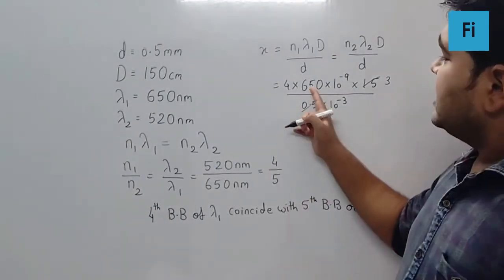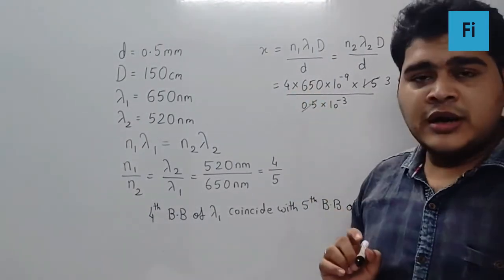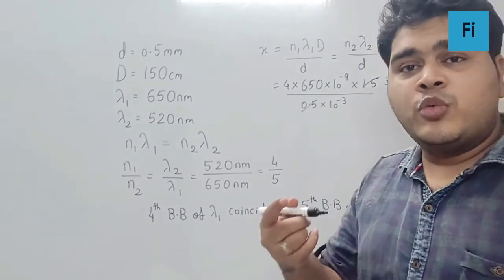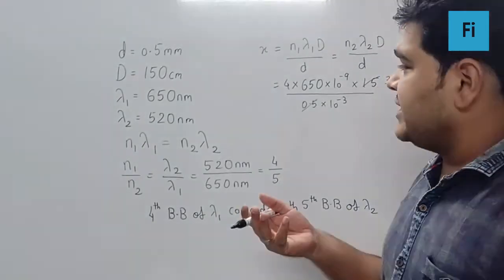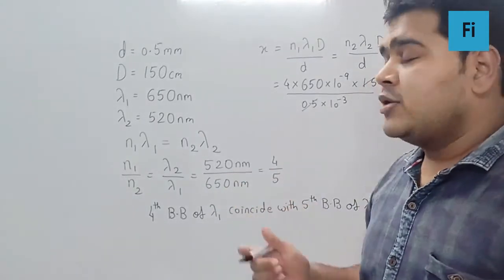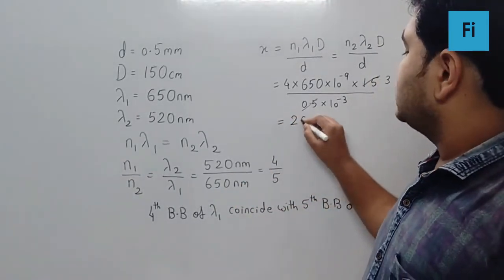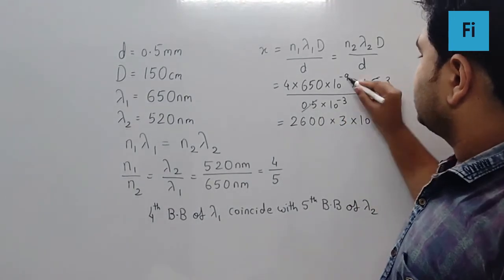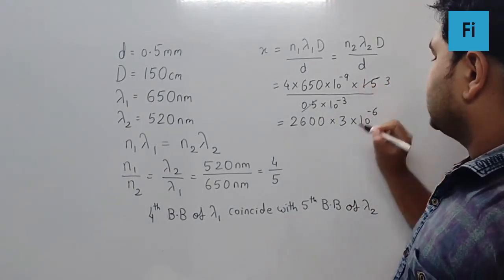And this will be 650 times 4. I think it is going to be, if we do 40 times 2 that's double, so basically it becomes 1300. Then double that again. So 2, 6, double 0, times 3, times 10 raise to minus 9 plus 3 is going to be minus 6.